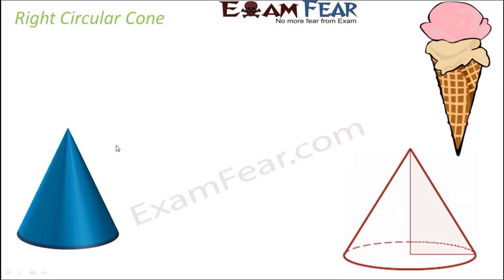What is a cone? When you think of a cone, the first thing that comes to mind must be ice cream cones. A cone is a 3D shape that tapers smoothly from a flat base to a point called the apex. The base need not be circular in general, but the cone we are discussing is the right circular cone, where the base is circular.